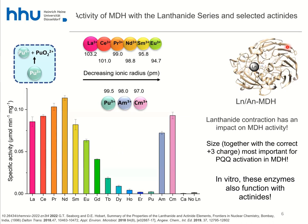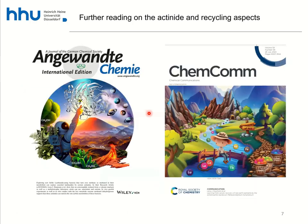We've also looked at whether we can feed bacteria directly with americium or curium to get them to grow using actinides instead of lanthanides — effectively replacing the essential lanthanides — and it turns out we can. That was just published this year. We've also been looking quite a lot at how to use bacteria directly to recycle lanthanides and actinides and separate them from each other, which is another study that came out this year.